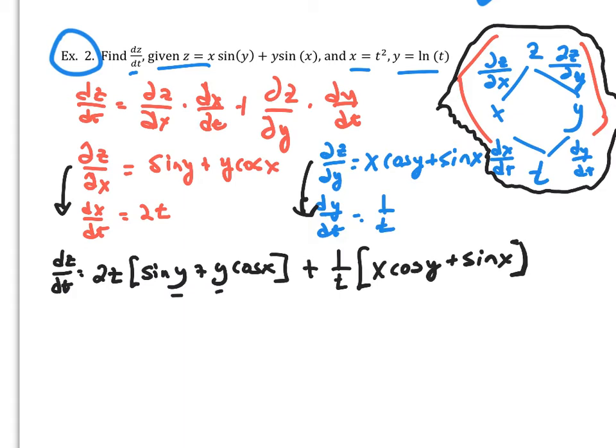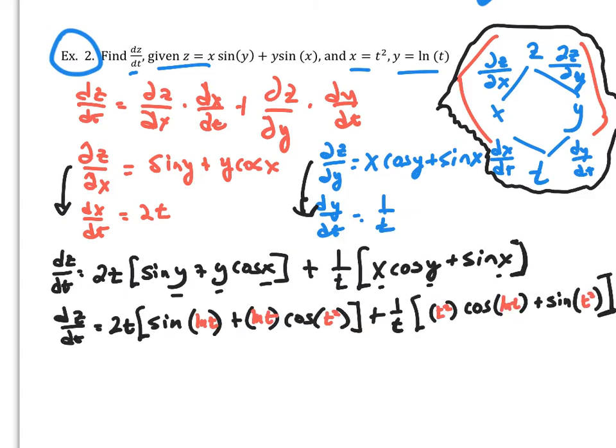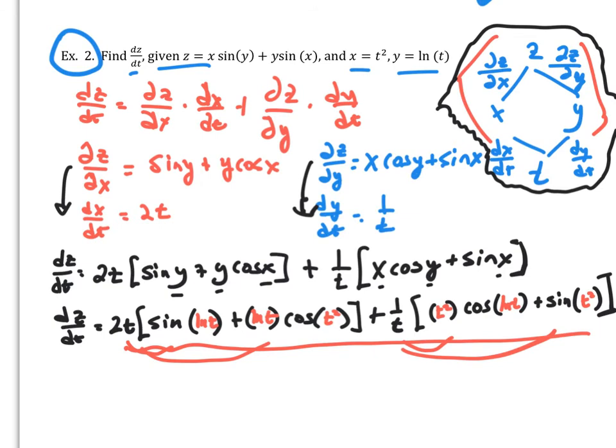So there's my dz dt. Now I have to go and substitute out my y's and my x's. Make sure you find all of them to sort it out. So this is what we end up with. I don't see too much simplification going on. But let's see if we can get anything out of this. At best you can probably just put this 2t into both these terms. And this 1 over t into both these terms. But that's about it. So that is finding dz dt using the chain rule.